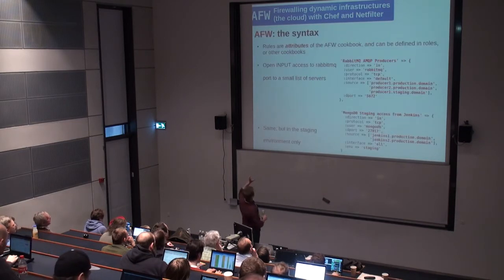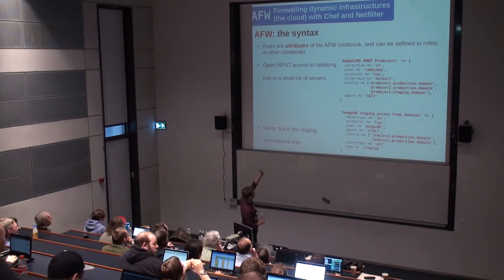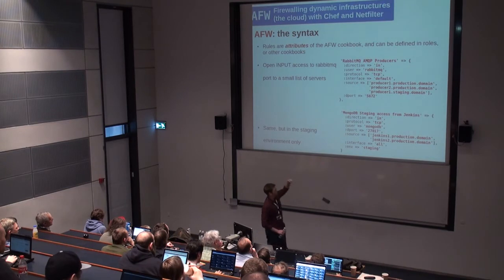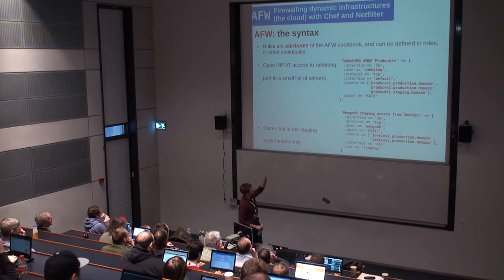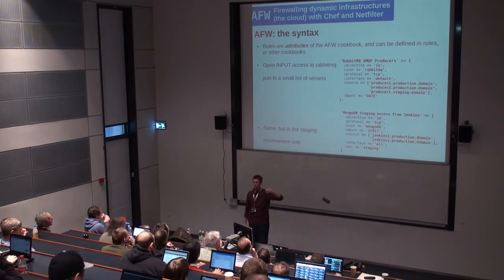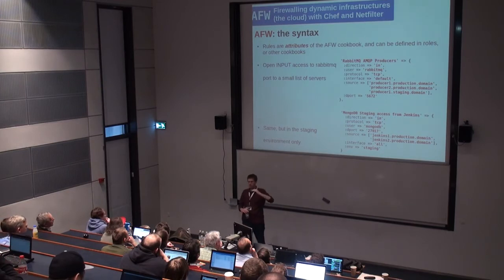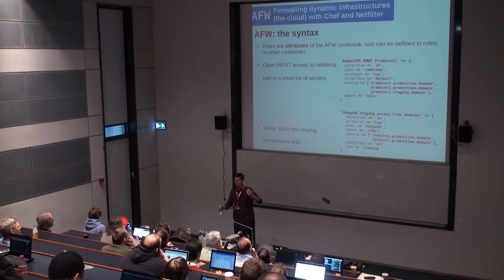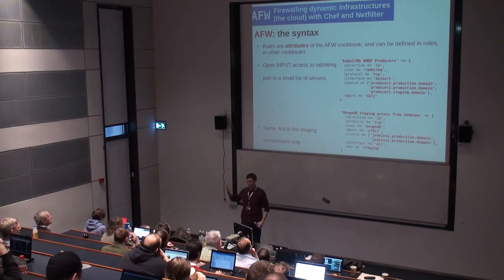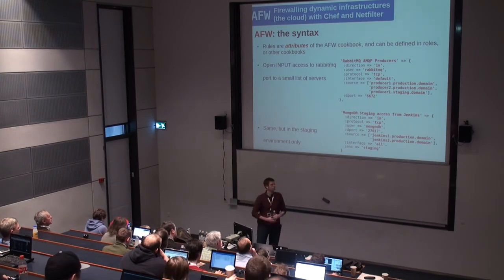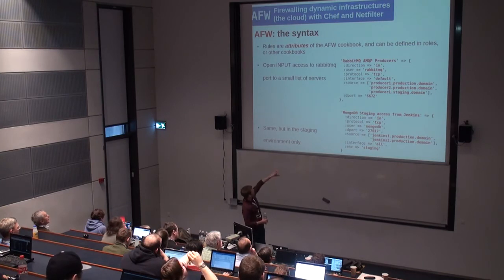Here's what a rule looks like. This is a simple rule for a RabbitMQ AMQP producer — it doesn't use anything dynamic. It accepts connections from a list of sources using FQDNs that are statically defined. One advantage over raw iptables: when you use a hostname in iptables it only resolves one IP on load. If you have four IPs in a DNS round-robin, you won't get all four. The AFW cookbook handles that — so if you're opening an outbound connection to something like Twilio's API with three IPs, it opens the firewall for all three, not just the one that came back at rule load time.